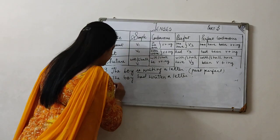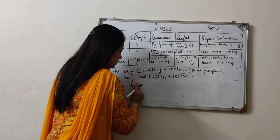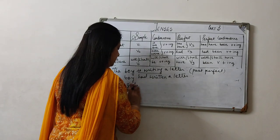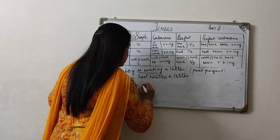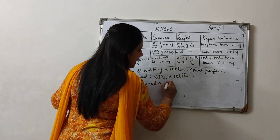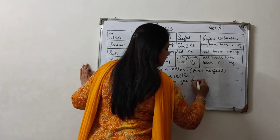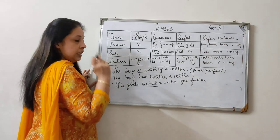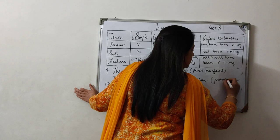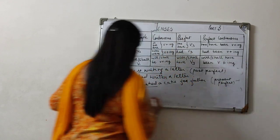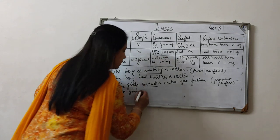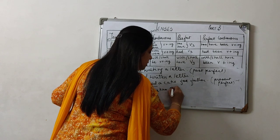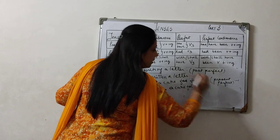Sentence 10. Suppose the sentence is: 'The girls baked a cake for father.' 'Baked' is second form — it is simple past. Suppose we have to change it into present perfect. Present perfect is here. Girls are many, so we take the plural form — 'have'. 'The girls have baked a cake for father.'